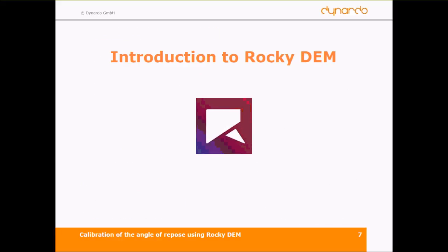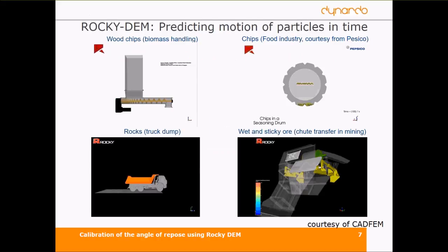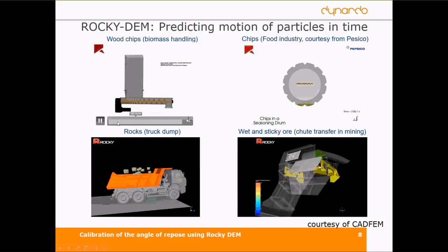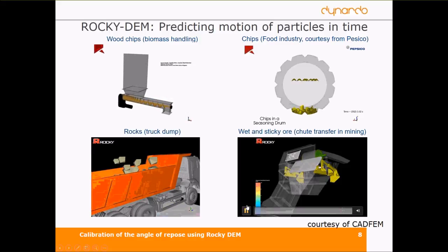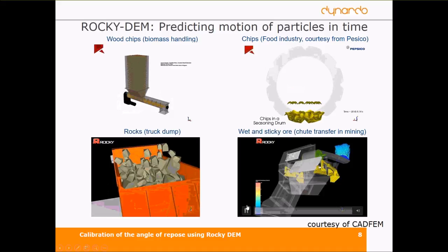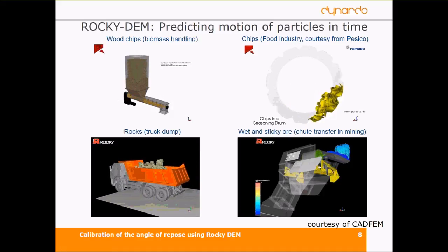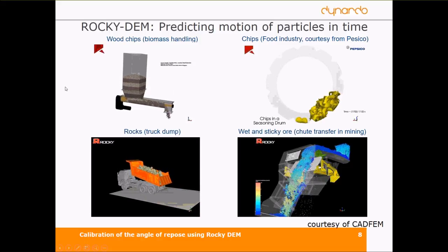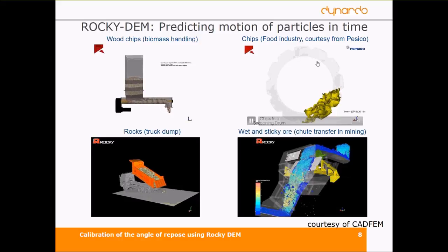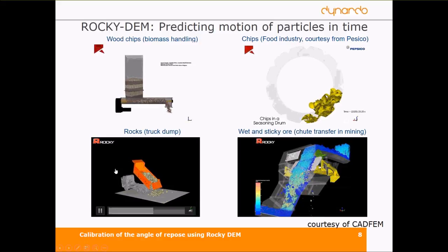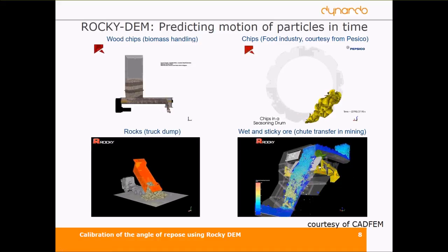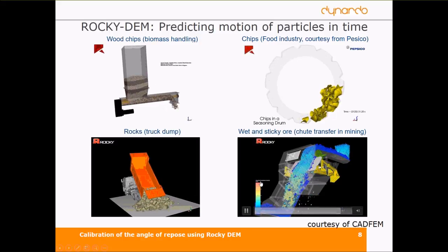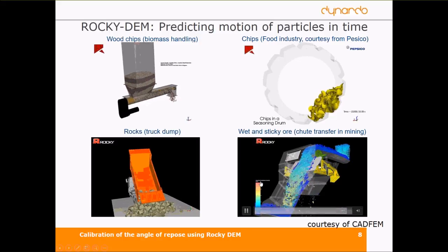In today's webinar we also want to speak about Rocky DEM. Here you can see four clips about applications of Rocky: biomass handling of woodchips and the food industry, a truck which dumps its rocks, and a chute transfer in mining. You can see there are a lot of possible applications with Rocky.